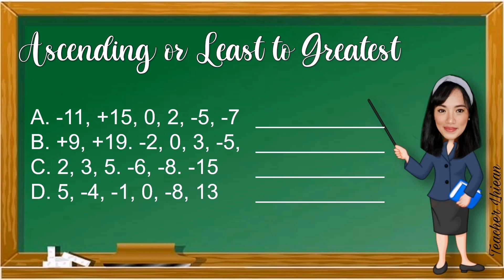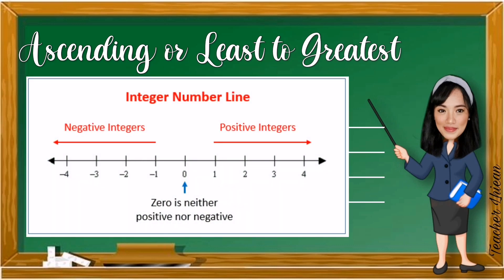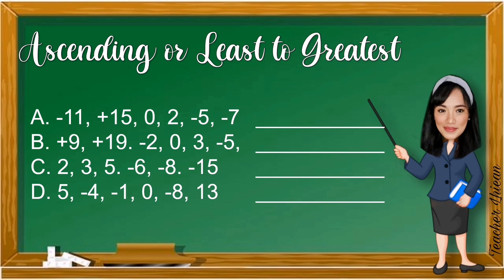Let us arrange the following integers in ascending order — from least to greatest. Think of the number line: positive integers are on the right side and negative integers are on the left side. For Letter A, we start with the lowest negative integer first. The order is: negative 11, negative 7, negative 5, then 0, followed by positive 2, and the highest is positive 15.